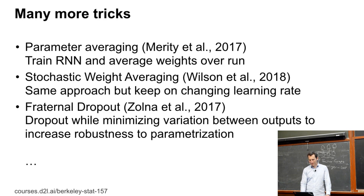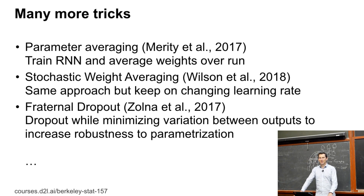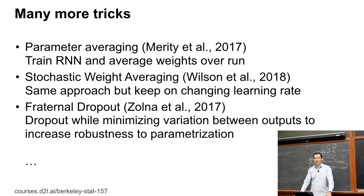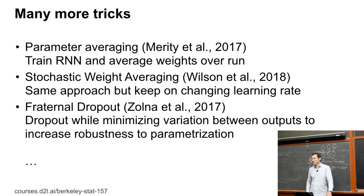There's one more technique: parameter averaging. This is from a paper by Merity et al. from 2017 — you could call it 'How to Train Your RNN, Parts 1 to 10.' It's a treasure trove of tricks they tried, showing how various tricks improve things. I've covered some of the more important ones, but there are minor tricks where every one gives you a tiny little boost. Unfortunately, these are not necessarily well understood despite various claims — by 'well understood' I mean a theorem, and no.